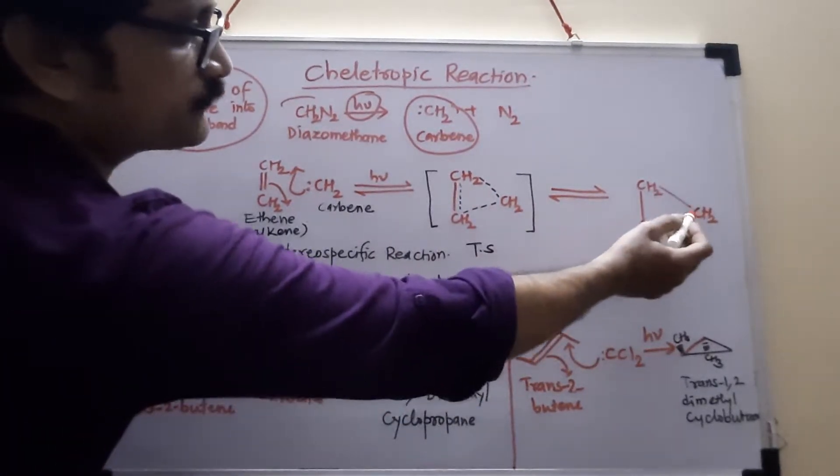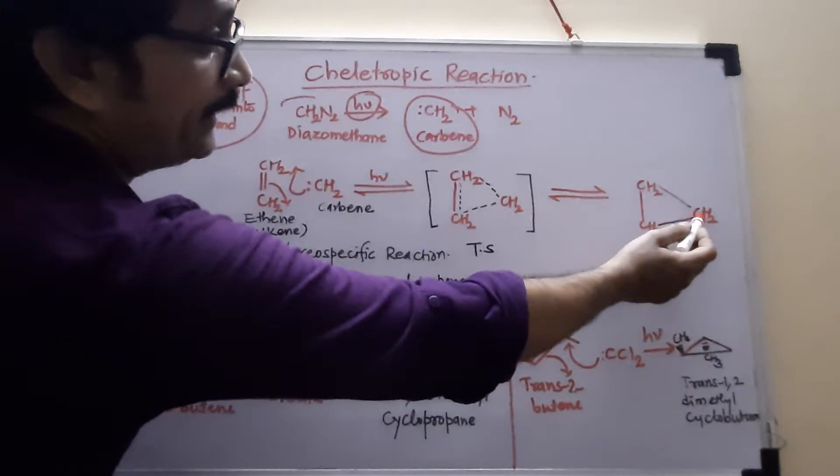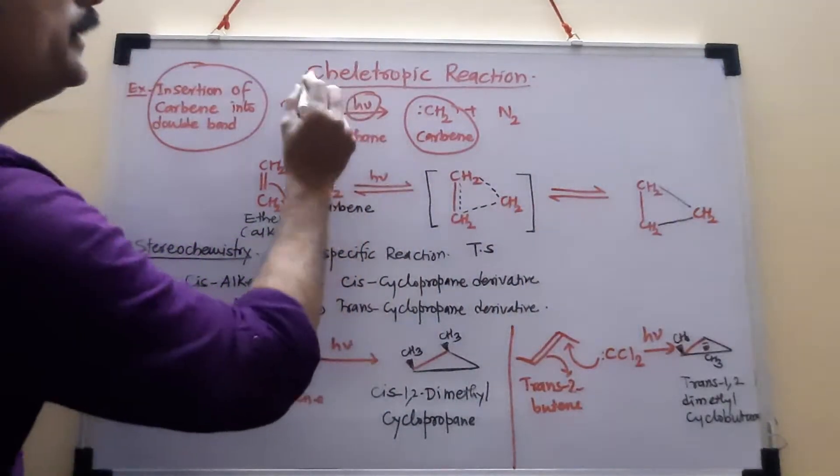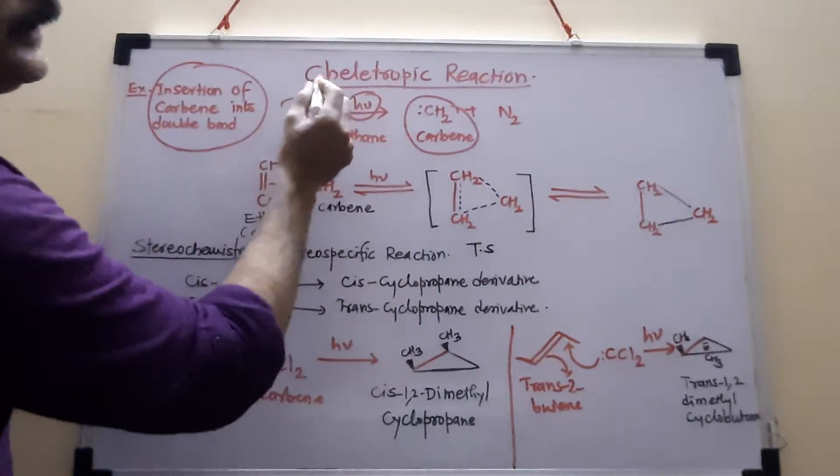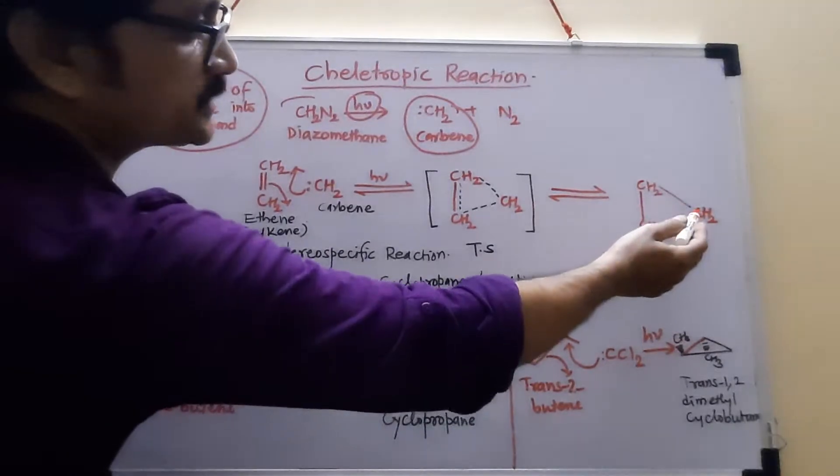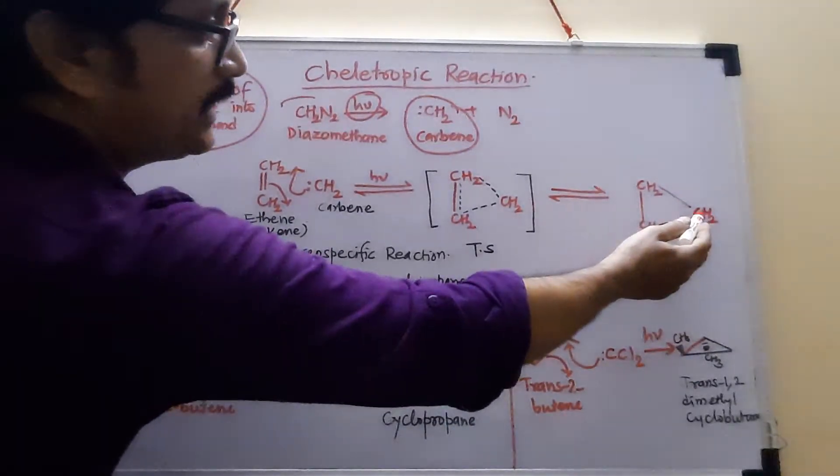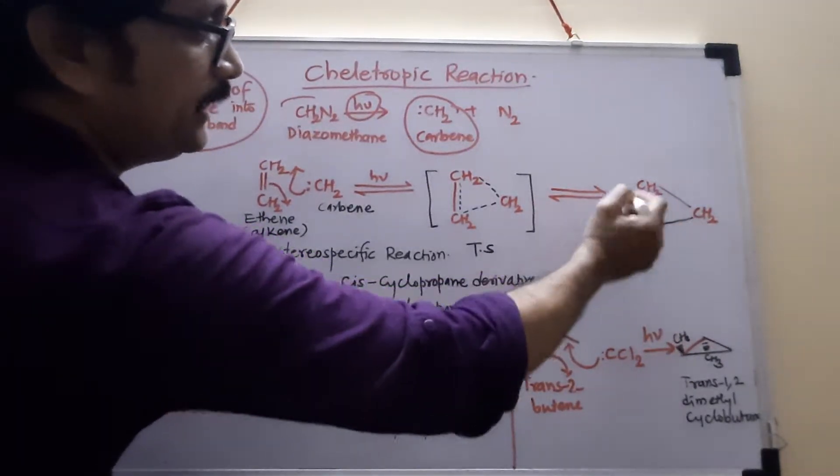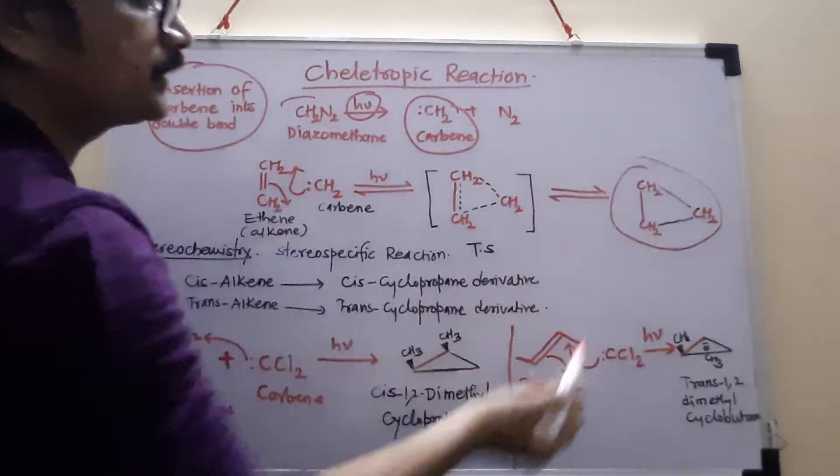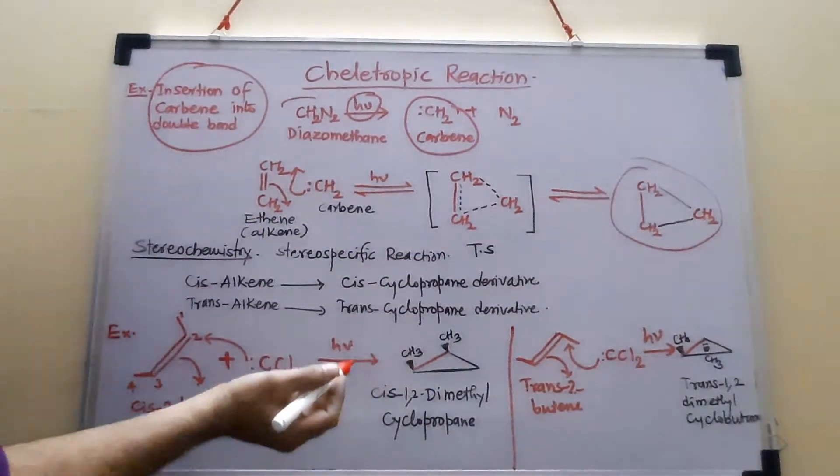And two sigma bonds are formed on the same atom. So this is a speciality of chelotropic reaction, where the two sigma bonds are formed on the same carbon. And we get here a three-membered ring cyclopropene.